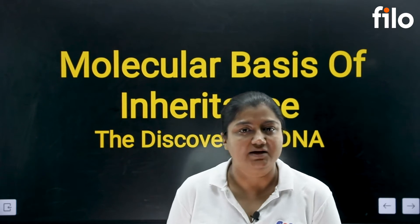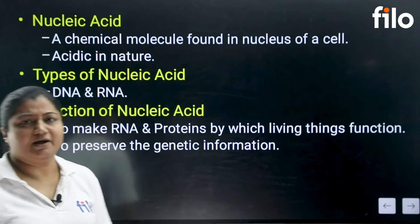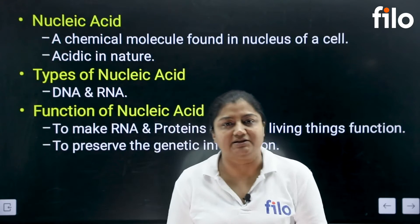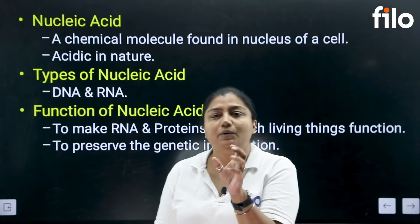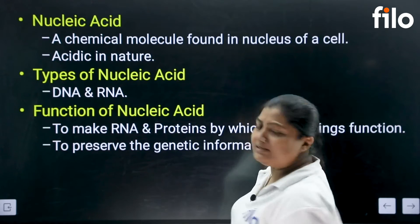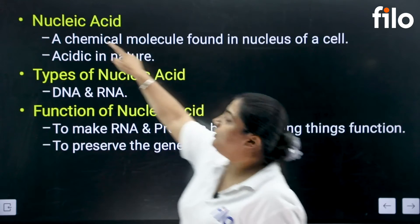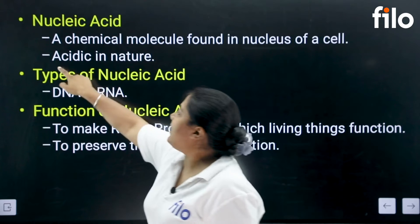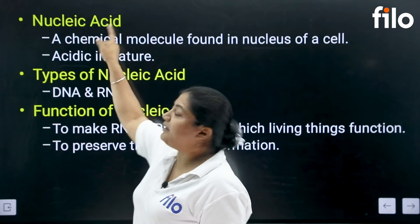So shall we start? The first question is: what is nucleic acid? Nucleic and acid are two terms. Nucleic means that it is taken from the nucleus — it is a chemical molecule found in the nucleus, so we have called it nucleic. In nature it is acidic, and because of that we have called it nucleic acid.